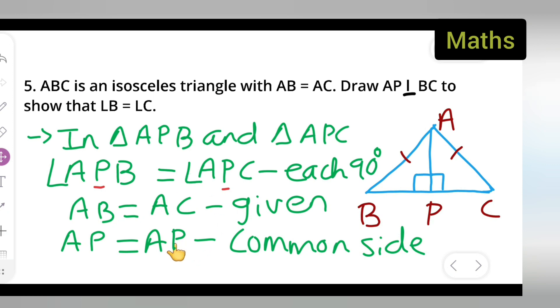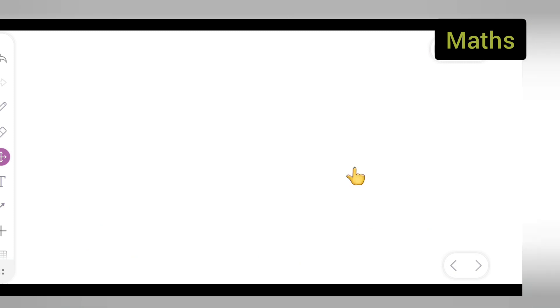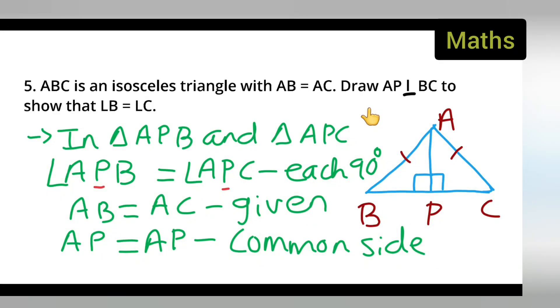So we got three reasons, so we can say that triangle APB is congruent to triangle APC. Let me turn the page. Therefore, triangle APB is congruent to triangle APC by RHS rule.